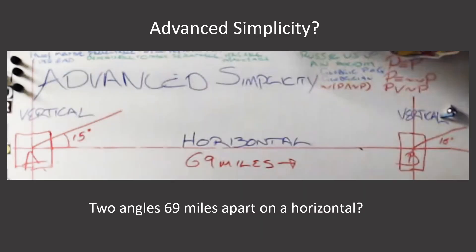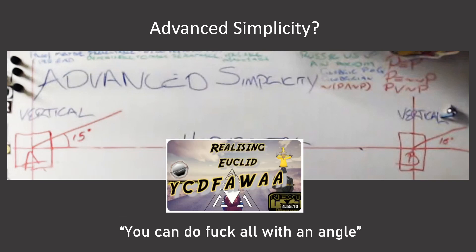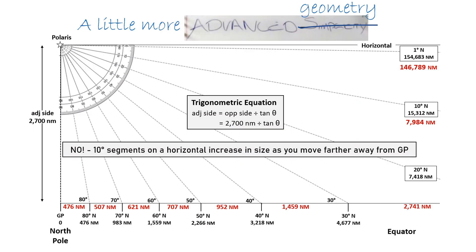But this is all that Bev drew on his whiteboard, two angles that are 69 miles apart on a horizontal which he labeled advanced simplicity. But since Bev likes to boast that you can do fuck all with an angle, he didn't understand that he could have used trigonometry and found out that nope, those 10 degree segments on a horizontal are not a linear relationship, but increase in size as you move farther away from the GP.